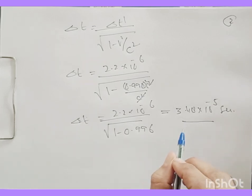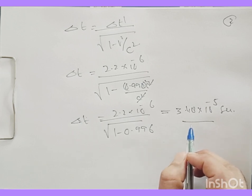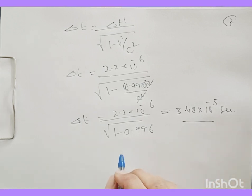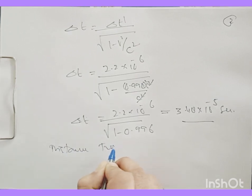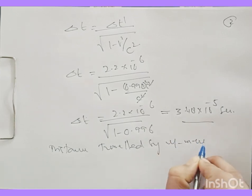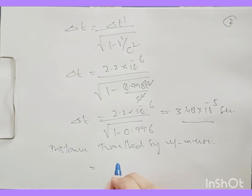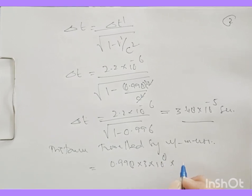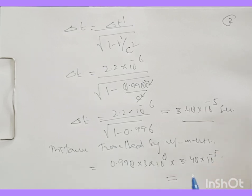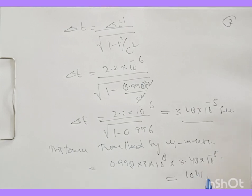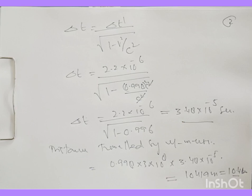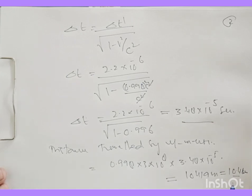We can now calculate the distance travelled by the mu meson in view of time dilation. The distance travelled by the mu meson is 0.998 times 3 times 10 to the power of 8 times the dilated time 3.48 times 10 to the power of minus 5. This comes out to be approximately 10,419 meters, which is nearly 10.4 kilometers. So using the concept of time dilation, the distance travelled by the mu meson is 10.4 kilometers.